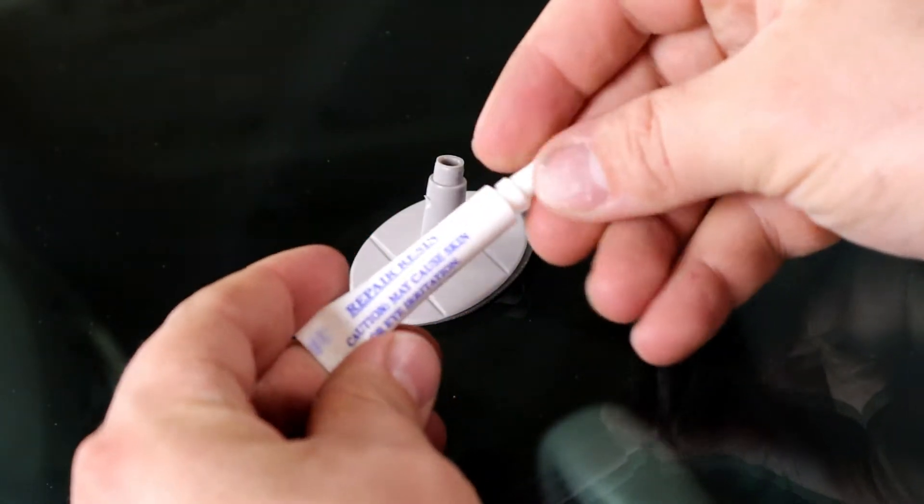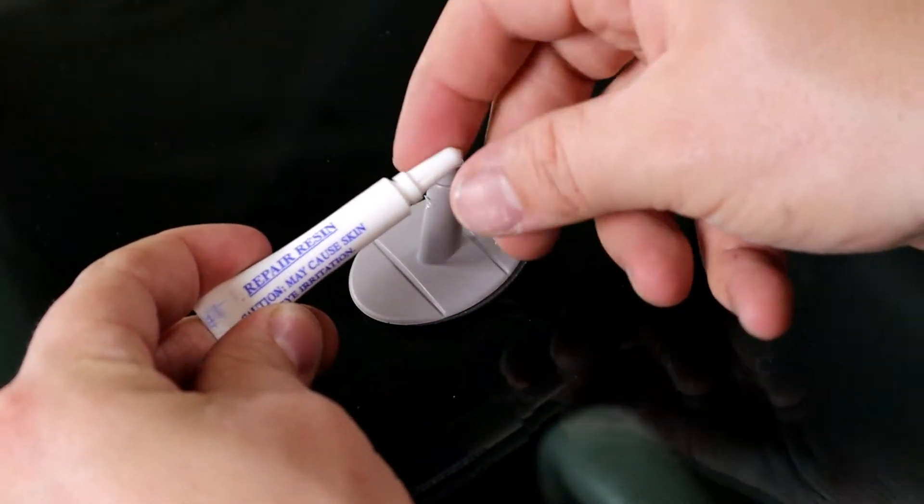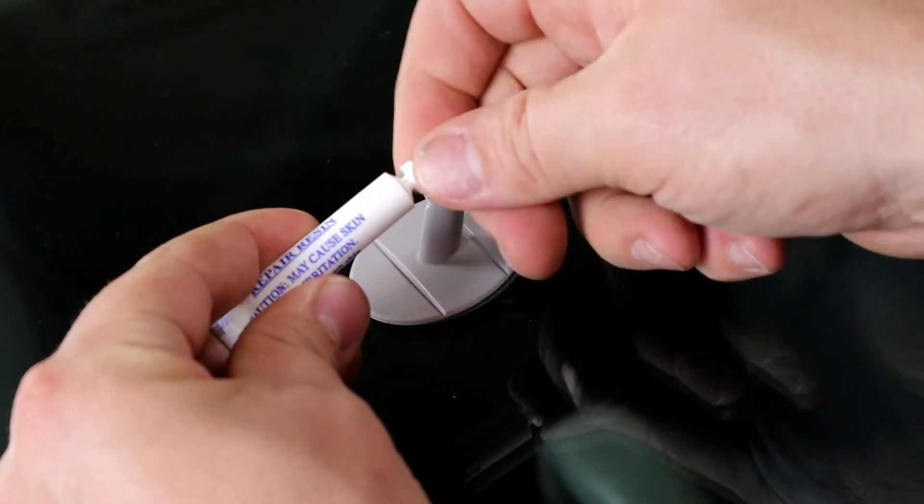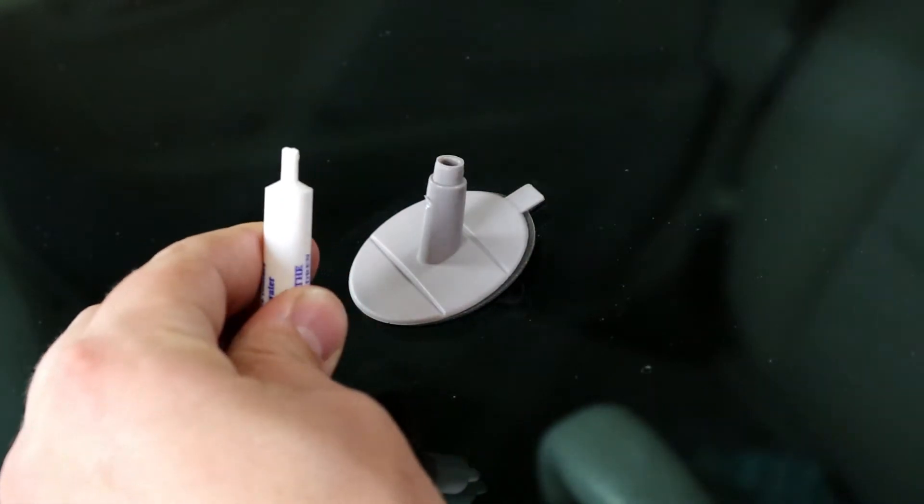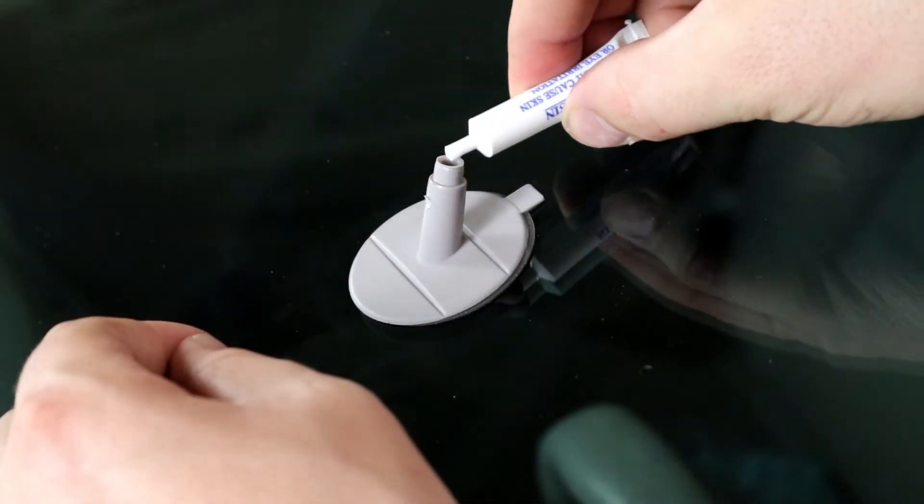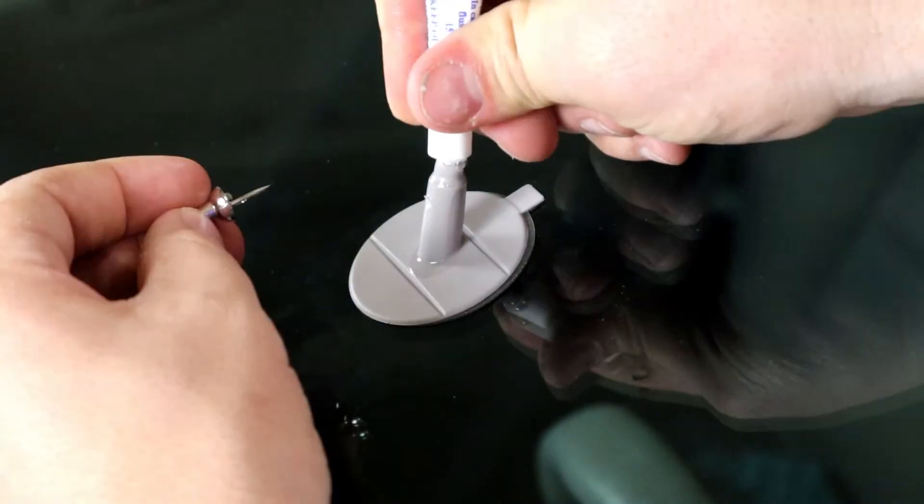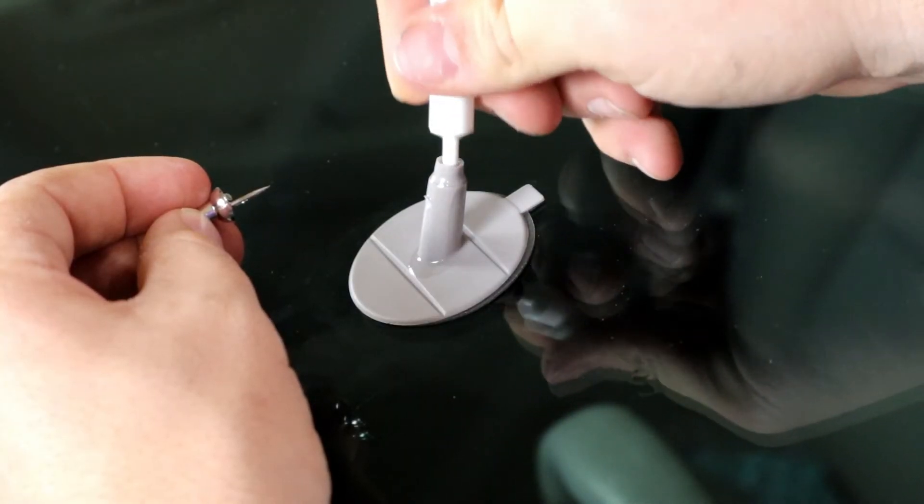What you're going to do is you're going to place the resin into the pedestal itself. So what you do is you cut the tip off the container. Place the stem about a quarter inch into the pedestal opening, slowly squeezing the tube to release the resin into the pedestal.